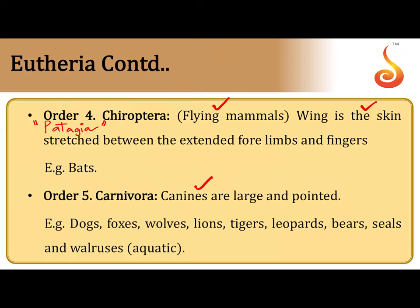Order Carnivora have very pronounced canines because they hunt prey. They are carnivorous organisms, and the order includes all carnivores including aquatic forms like walruses.